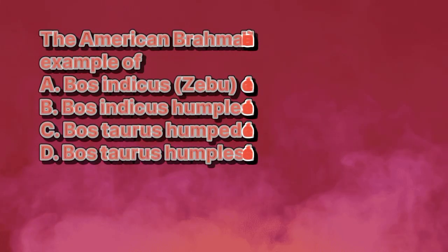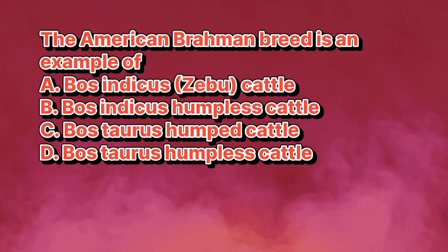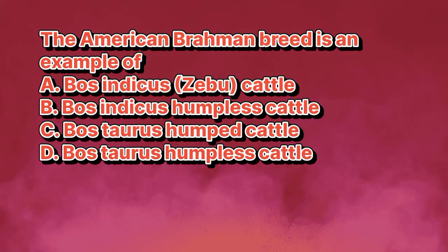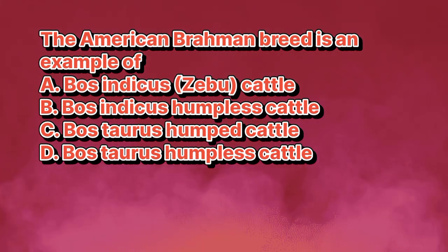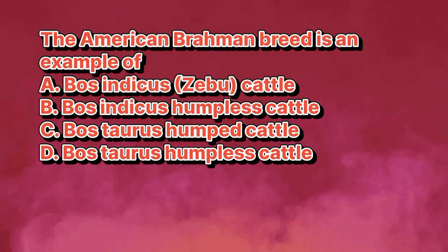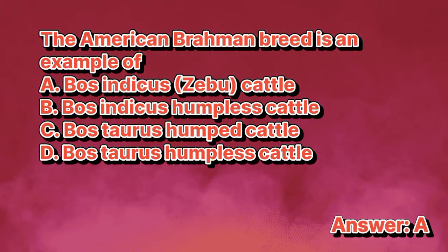The American Brahman breed is an example of: A. Bos indicus zebu cattle. B. Bos indicus humpless cattle. C. Bos taurus humped cattle. D. Bos taurus humpless cattle. The answer is letter A.